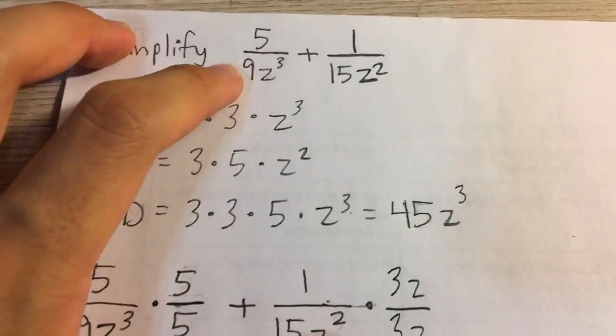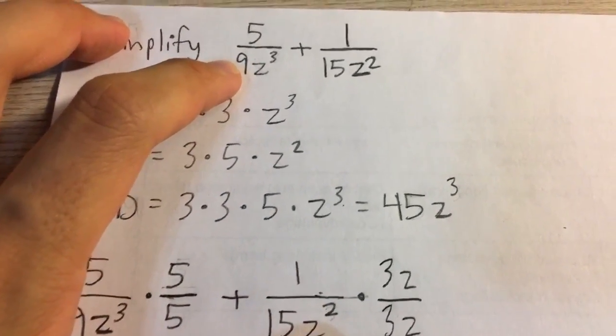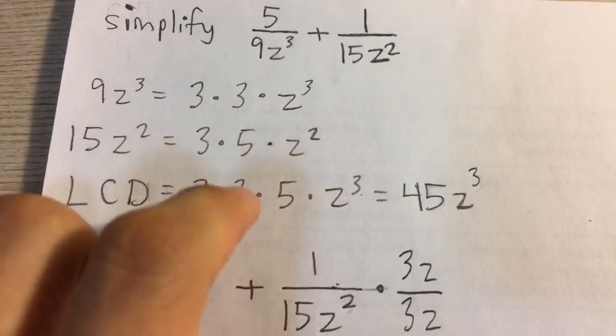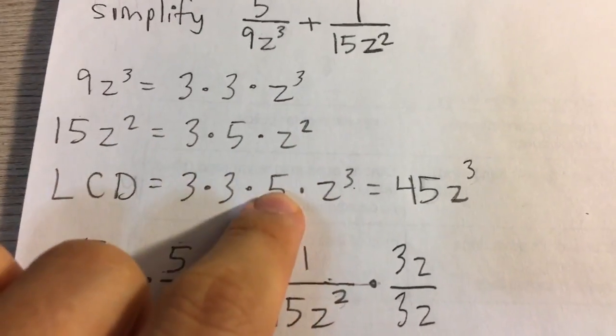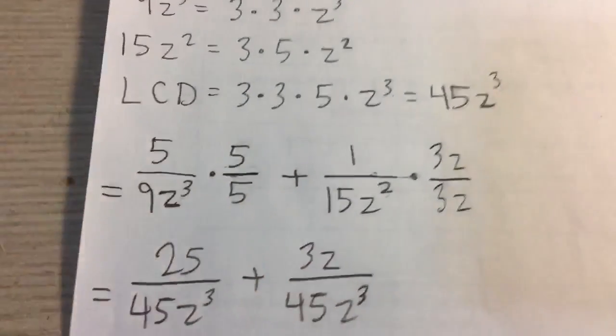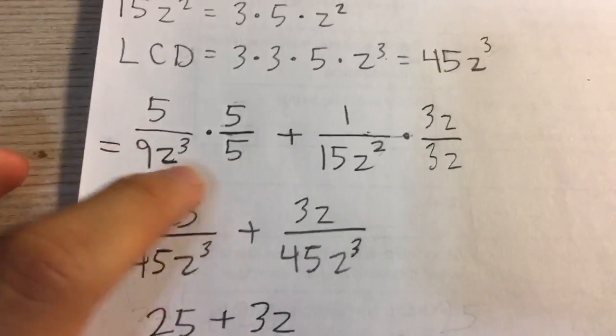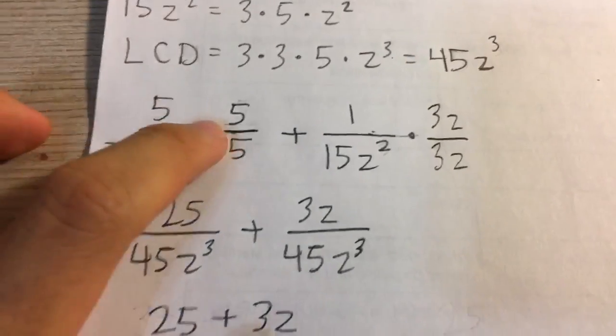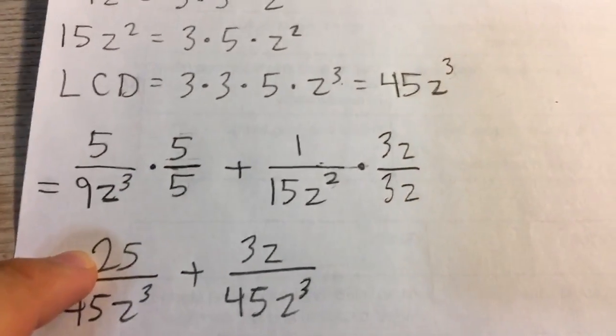For this expression I want to make this 45z cubed. Notice it's missing a 5 from here to here, and that's about it. I'm going to multiply both numerator and denominator by 5. The denominator will become 45z cubed, and our numerator will become 25, 5 times 5.